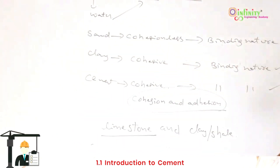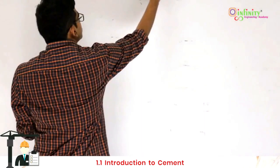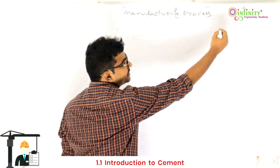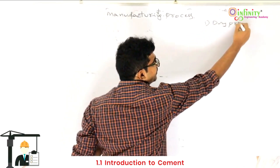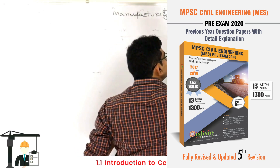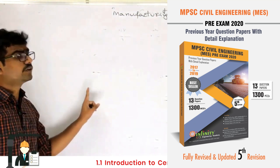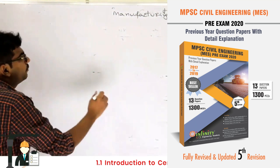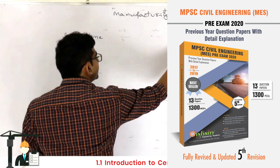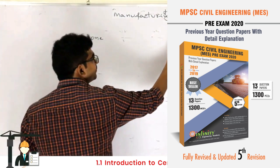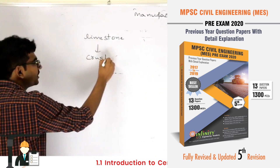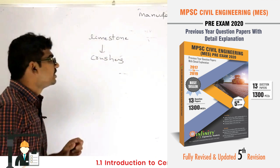Cement is basically manufactured by two methods: the first one is the dry process and the second one is the wet process. Whatever method we use, the raw materials remain the same — limestone and clay. First, limestone and clay are taken separately and sent into the crushers.